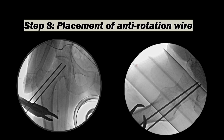Once you have placed the guide wire for DHS insertion, to prevent rotation of the fragment you can place an additional wire in the superior quadrant. Studies suggest the wire should be parallel to the wire of the lag screw. But in some cases, like in comminuted fractures, you can titrate the position of this derotation screw in a plane which requires more stability. For example, if there is posterior comminution, the guide wire for the derotation screw should preferably be placed in the posterior part because that is going to span the comminution.